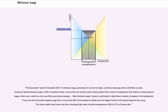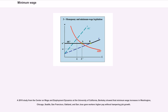High minimum wages, particularly in rigid labor markets, do appear to hit employment. France has the rich world's highest wage floor, at more than 60% of the median for adults, which helps explain why France also has shockingly high rates of youth unemployment — 26% for 15-24 year olds. A 2018 study from the Center on Wage and Employment Dynamics at the University of California, Berkeley showed that minimum wage increases in Washington, Chicago, Seattle, San Francisco, Oakland, and San Jose gave workers higher pay without hampering job growth.